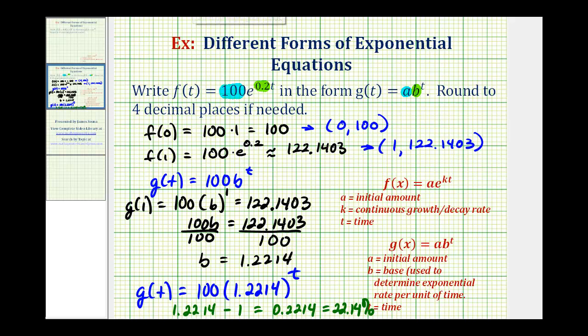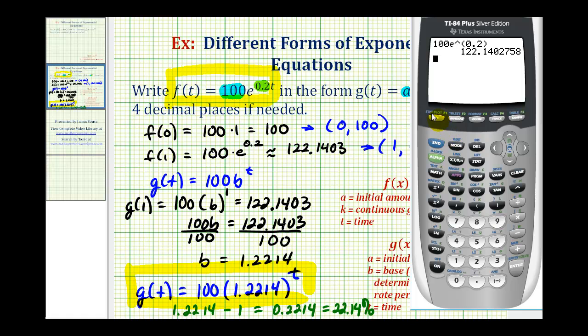To verify that our work is correct, let's go ahead and compare the function values of f of t and g of t using the table of a graphing calculator. I've already typed in the original function in y1, and the function that we found in y2. Now we'll compare the function values using the table feature. There might be a slight difference because we did have to round our base, but if we scroll down, we can see that the values of y1 and y2 are equal to each other. This is more than enough information to verify that our work is correct.